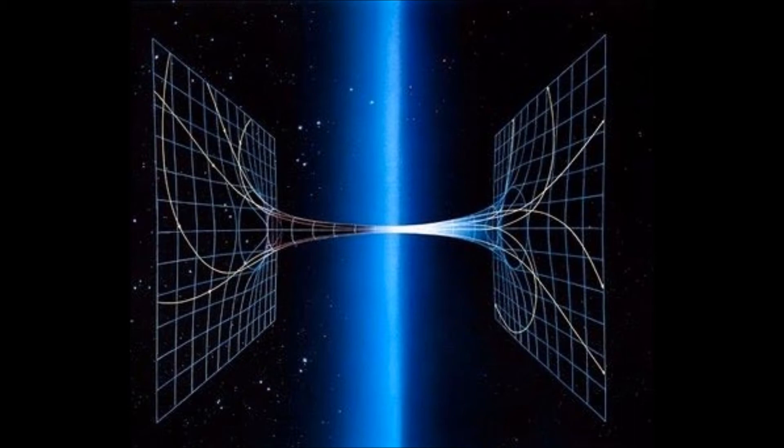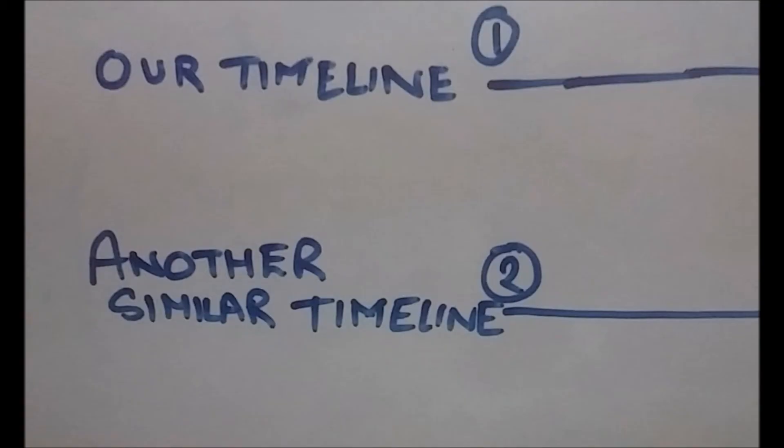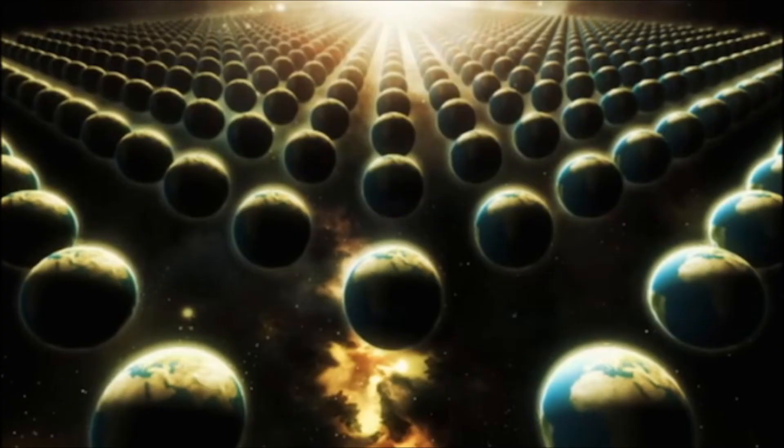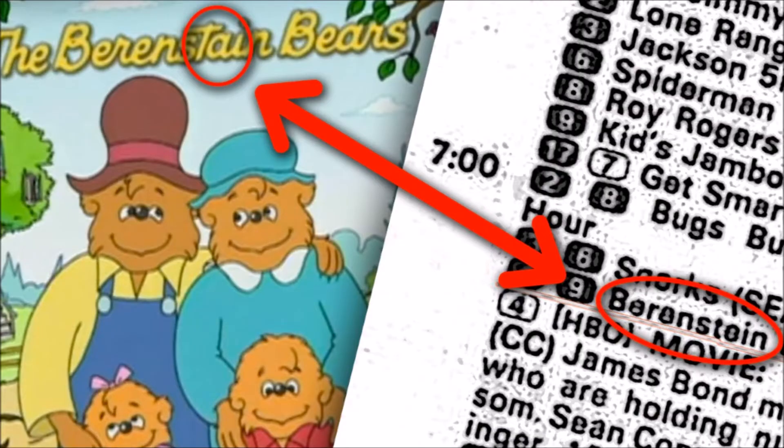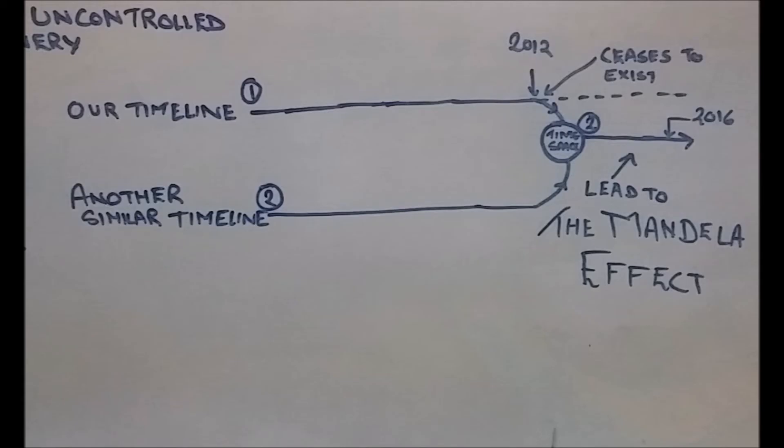Now, assuming our timeline as being one and another similar parallel timeline being two. See, there's this theory which states that there are infinite number of timelines where all of us exist and we exist under similar circumstances, but minor, minute details might change which are really hard to notice. So our timeline from the beginning of time has been our timeline, another timeline has been another timeline. So not to confuse them, we're gonna call them one, which is our timeline, and two, which is another similar timeline.